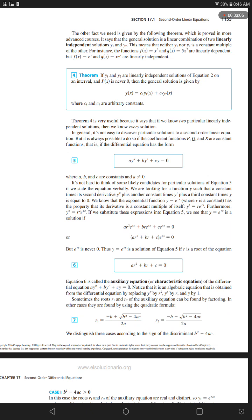If we substitute these expressions into equation 5, we see that y equals e to the power rx is a solution if A times r squared times e to the power rx plus B times r times e to the power rx plus C times e to the power rx equals 0, or A r squared plus B r plus C times e to the power rx equals 0.